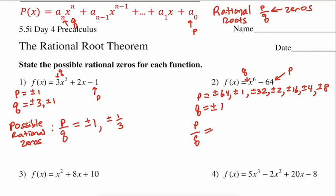Continuing with number 2: our P over Q list — since we're only dividing by positive 1 and negative 1 — doesn't change. So in least-to-greatest order: plus or minus 64, 32, 16, 8, 4, 2, and 1. The possibilities for a constant of 64 are pretty extensive, so if I were actually finding roots, I'd start with the small ones — plug in positive 1, negative 1, positive 2, negative 2 — start with the smallest possibilities.